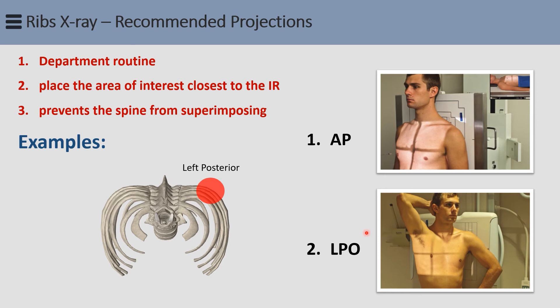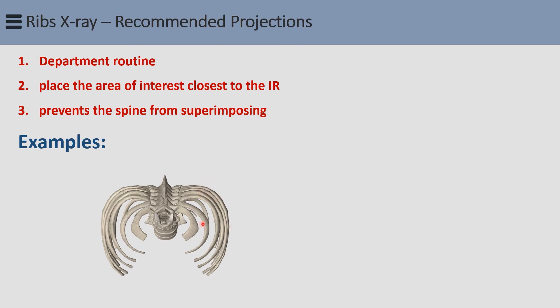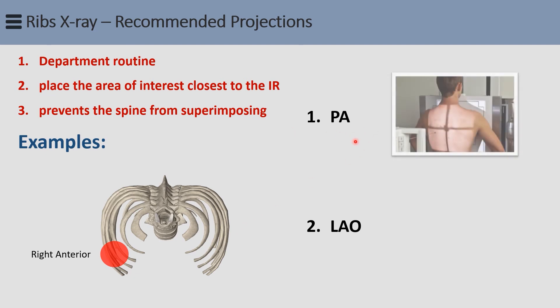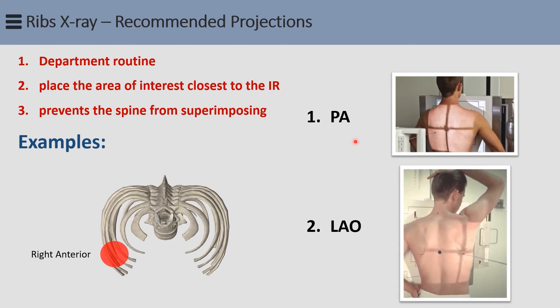Let's have another example: a patient who has trauma to the right anterior ribs. With the same reasoning, the two projections would be a straight PA and a left anterior oblique (LAO). Also, the erect or recumbent position should be determined by the level of the injured ribs — whether it is above or below the diaphragm.